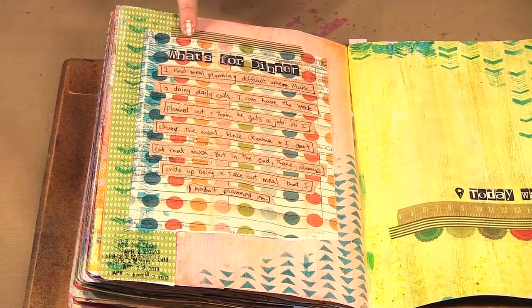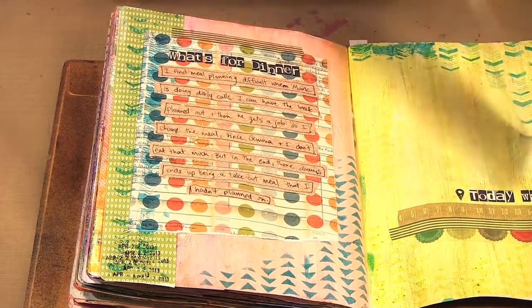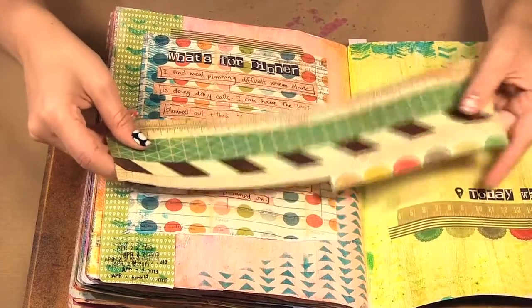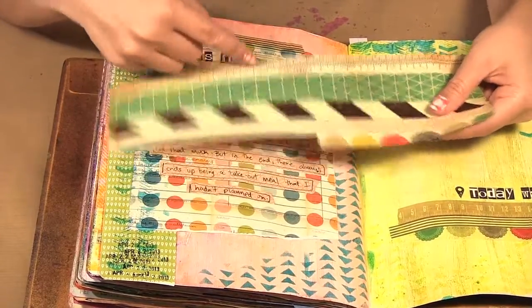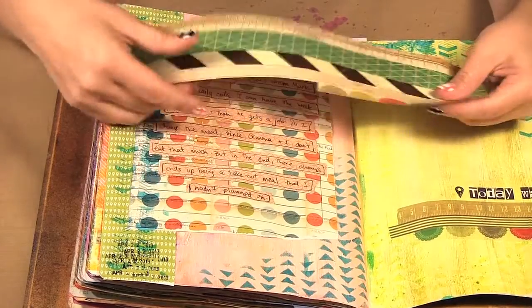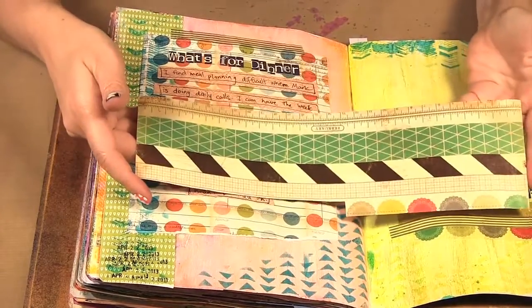Then here this is some of the washi tape. It comes in a 12 by 12 page and you just cut out the strips you want to use and put it down so you get a whole variety of patterns, just 12 inches of each pattern.